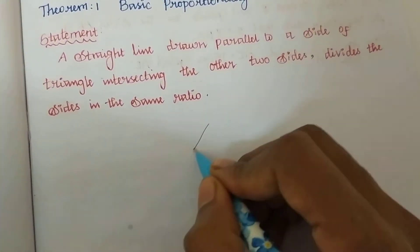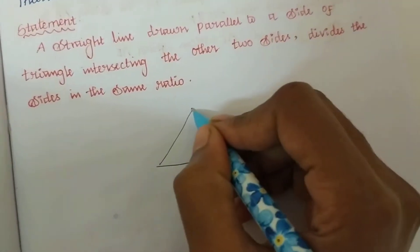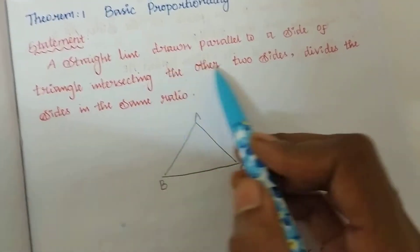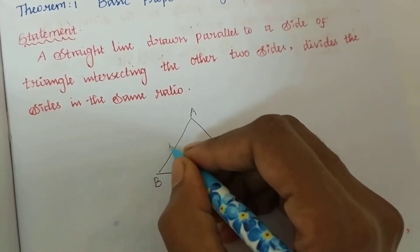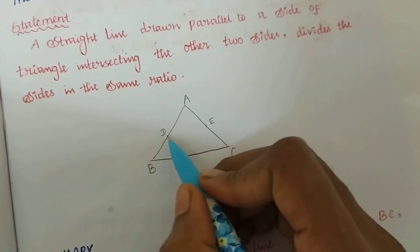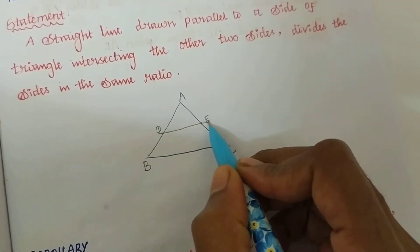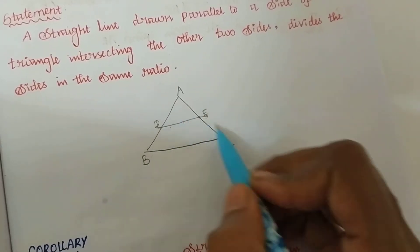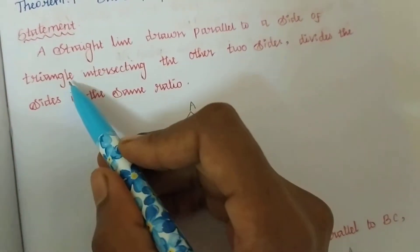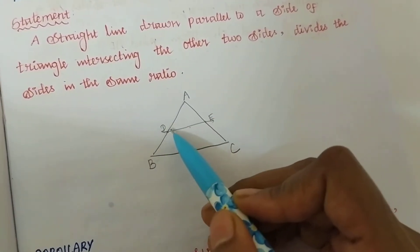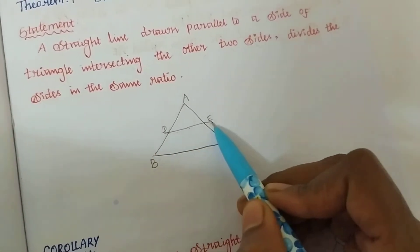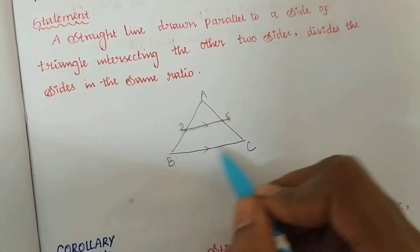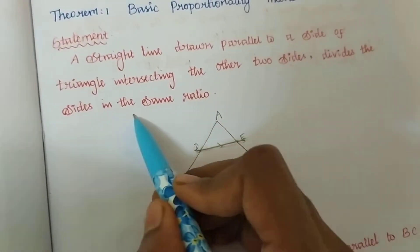So we are having a triangle with vertices A, B, C. We draw a line parallel to one side of the triangle intersecting the other two sides. We mark points D and E on those two sides. This line DE is parallel to the third side BC. So the intersection points D and E are on the two sides of the triangle.